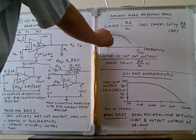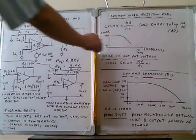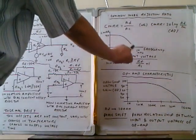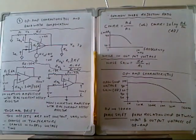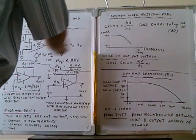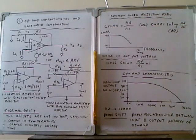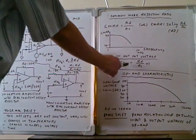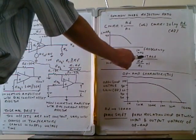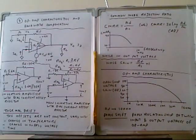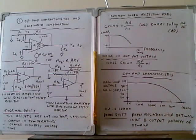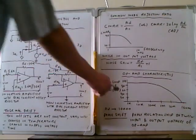The frequency response follows a Bode plot characteristic. When noise is present at the input of the operational amplifier, noise gain can also occur, so the noise in the output voltage can be calculated. The noise gain is equal to Rf divided by R1, plus 1.